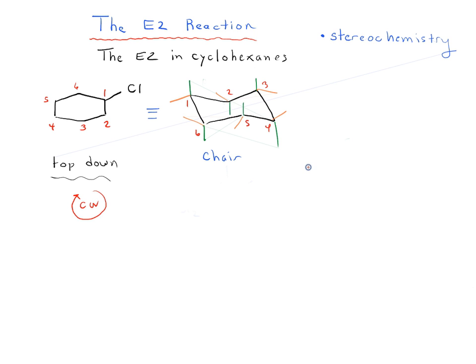On carbon one we've got our chlorine, and we'll make it axial arbitrarily. We're going to see how chlorine becomes equatorial in the other chair form. All the other groups I haven't drawn are hydrogens — there are hydrogens at each remaining position around the ring.